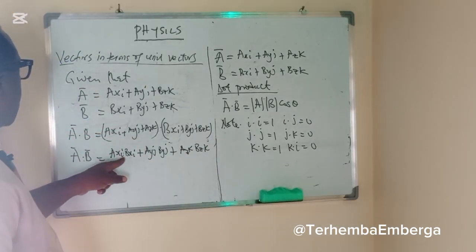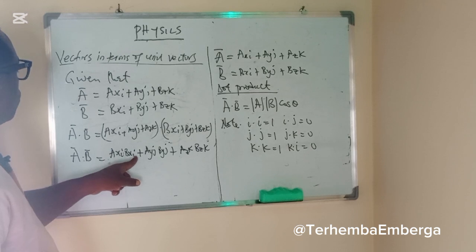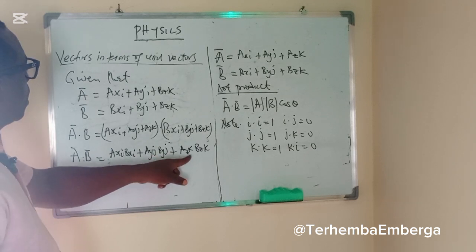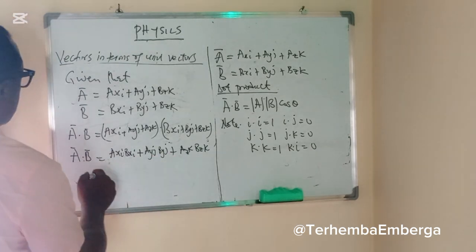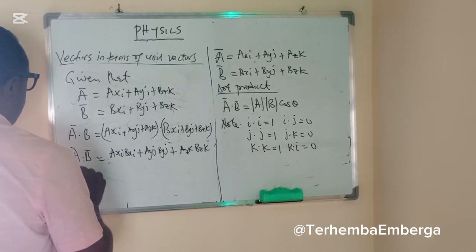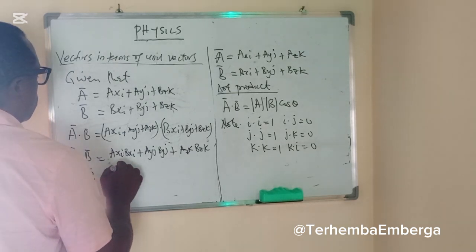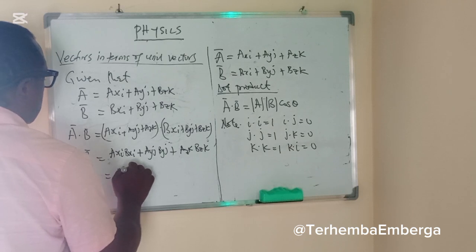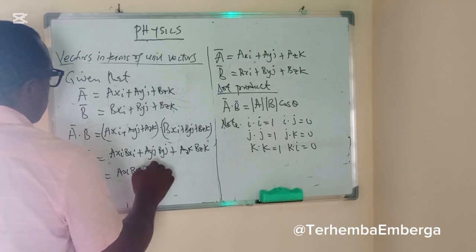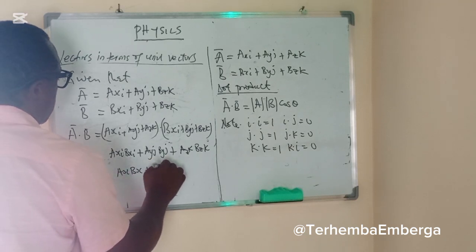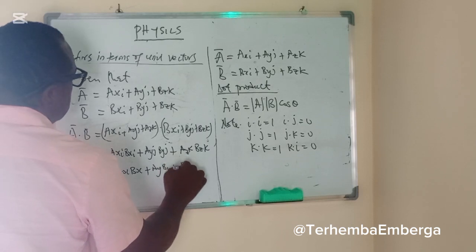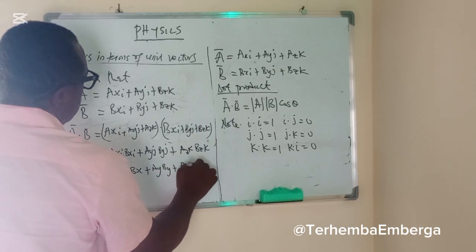We know that I dot I is 1, J dot J is 1, K dot K is 1. So we can write this as A dot B is equal to AX BX plus AY BY plus AZ BZ.